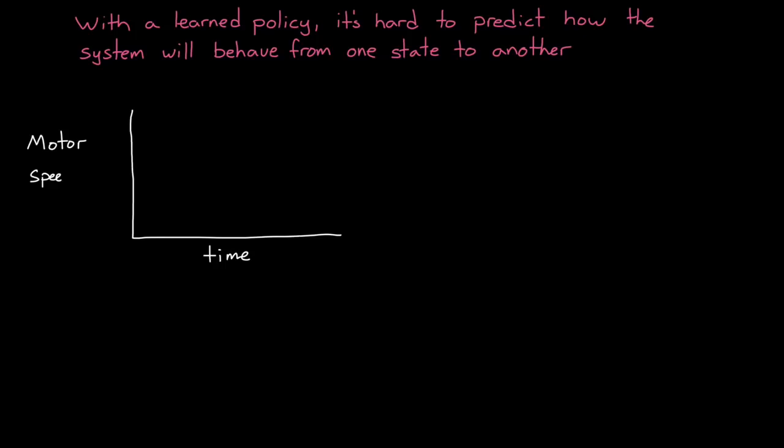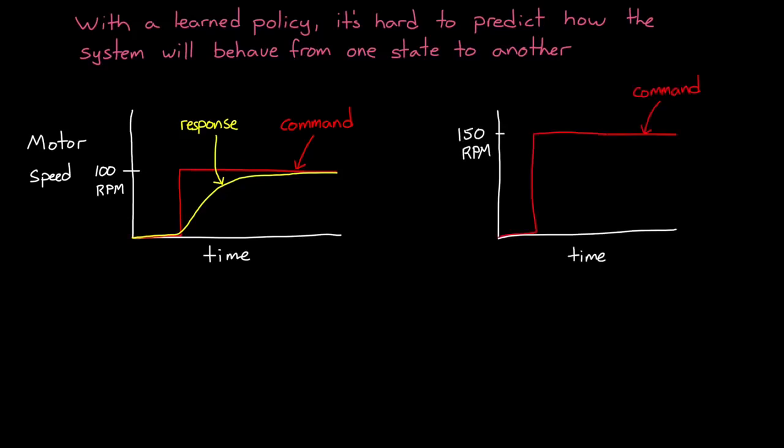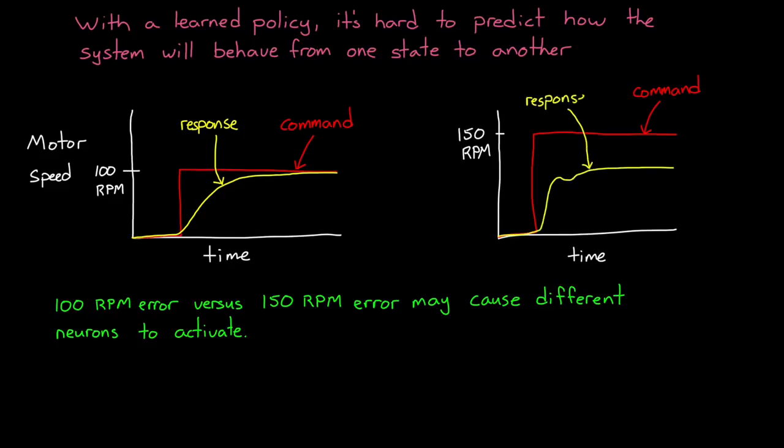For one, with a learned policy, it's hard to predict how the system will behave in one state, based on its behavior in another. For example, if we train an agent to control the speed of an electric motor, by having it learn to follow a step input from 0 to 100 RPM, we can't be certain, without testing, that that same policy will follow a similar step input from 0 to 150 RPM. This is true even if the motor behaves linearly. This slight change may cause a completely different set of neurons to activate and produce an undesirable result. We won't know that unless we test it.